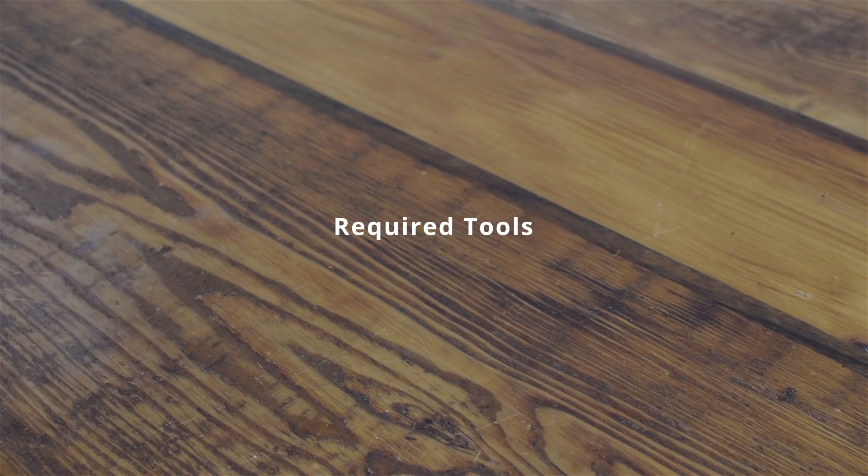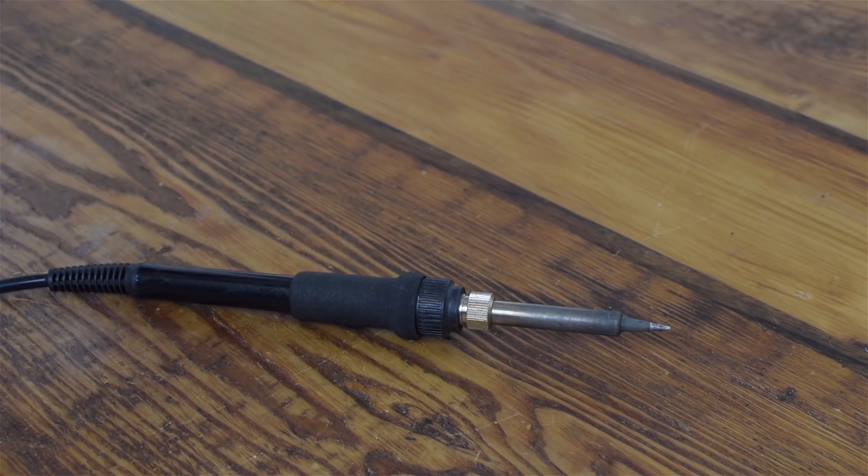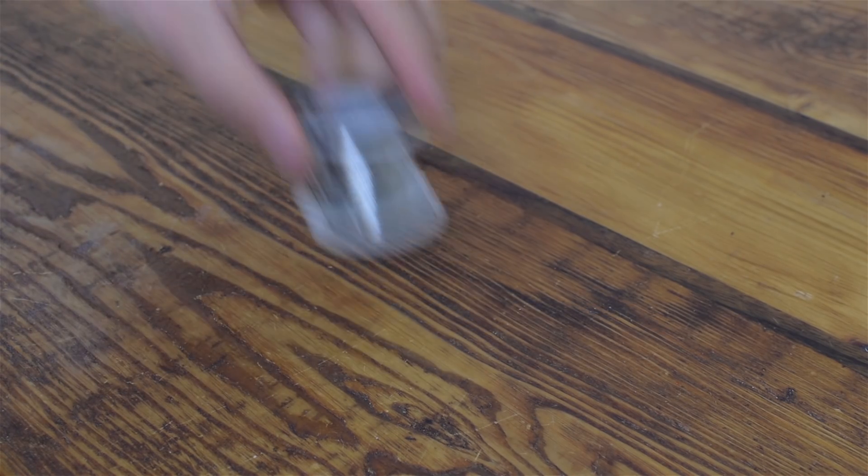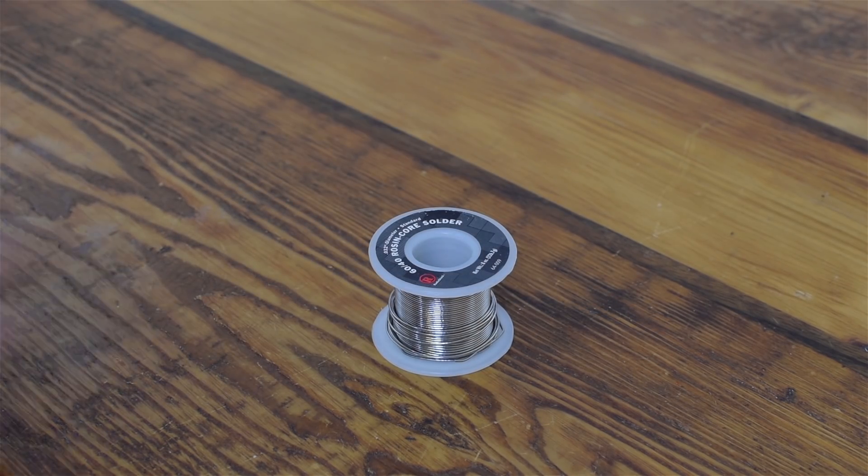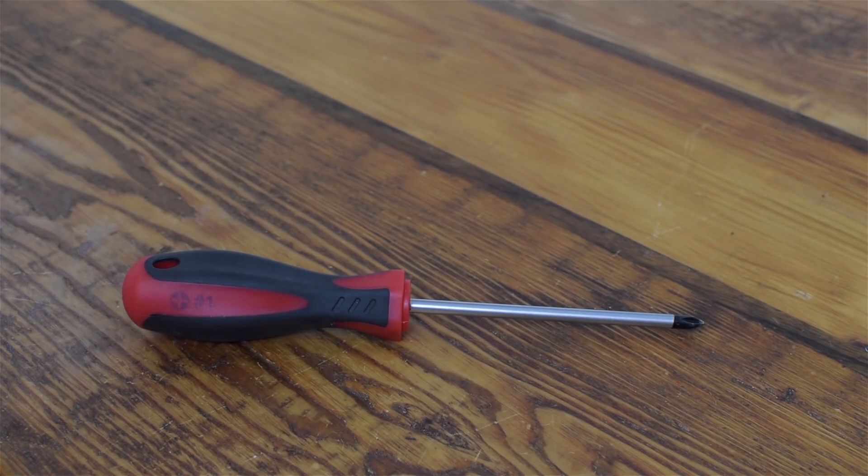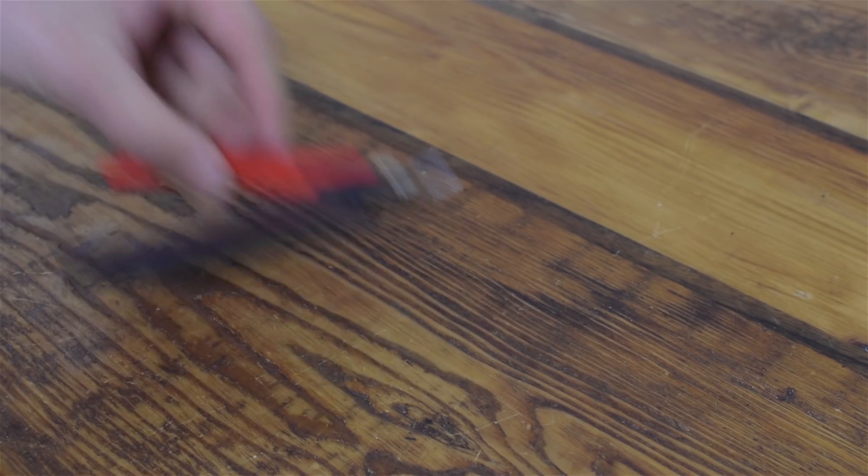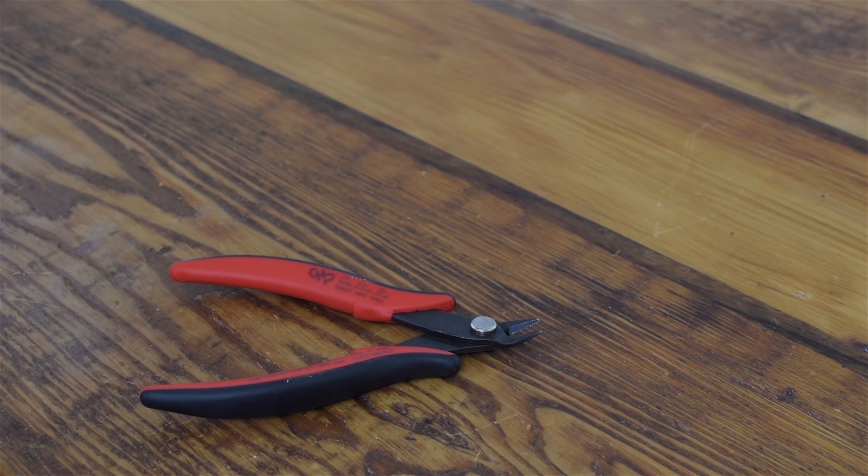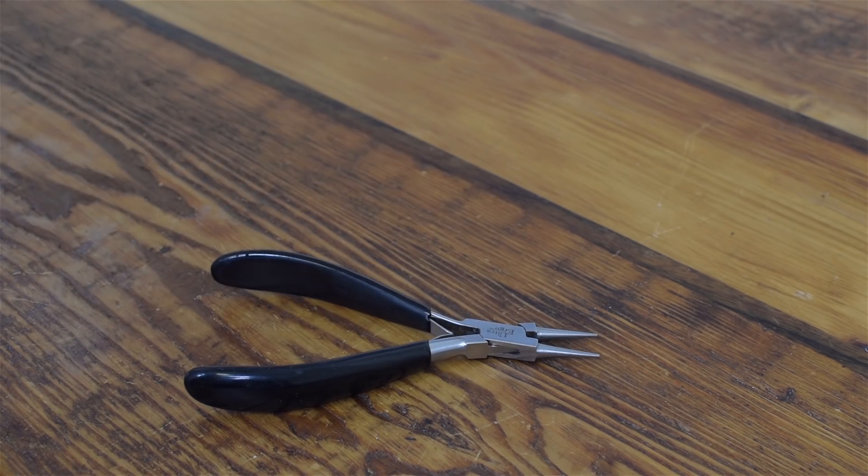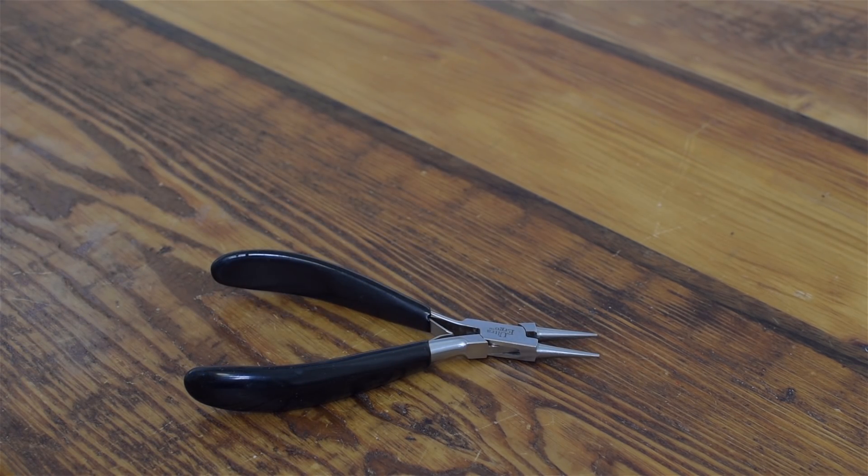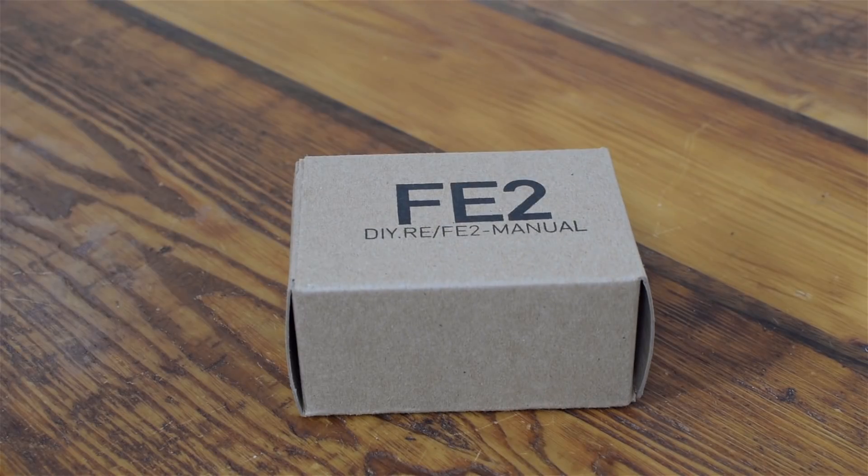To build the FE2, all you need is a soldering iron, some solder, Phillips head screwdriver, wire cutters, needle nose pliers are handy, and of course an FE2 DIY kit.